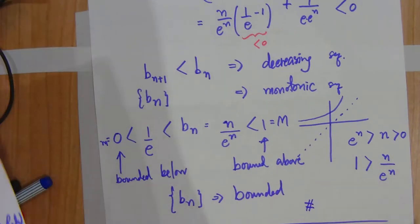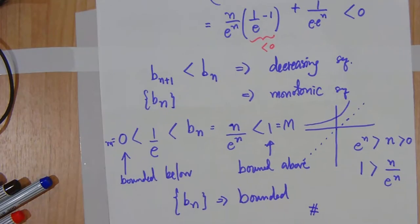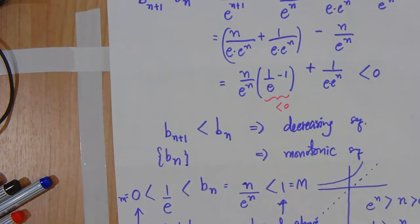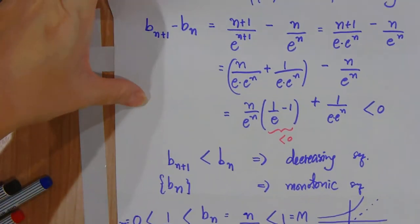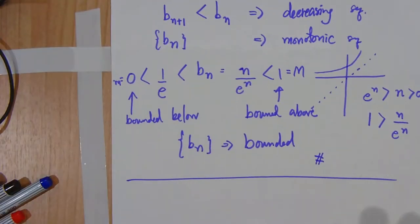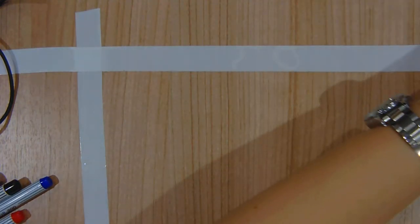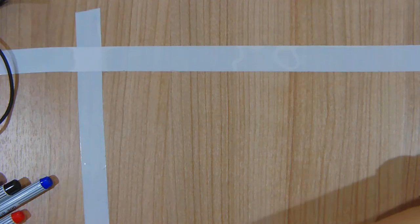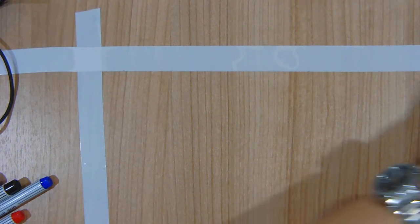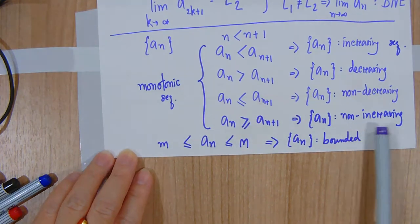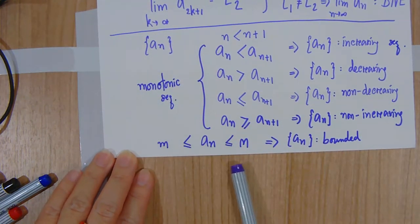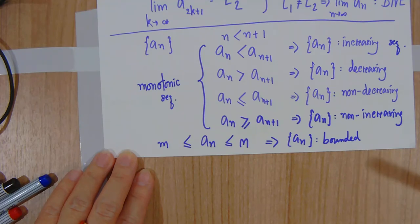That's all the examples covering techniques to find limits and monotonicity. Don't forget the conclusions from the last episode: increasing, decreasing, non-decreasing, non-increasing are all monotonic. And bounded above together with bounded below means bounded.